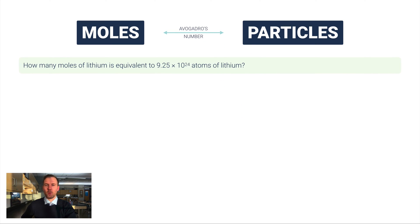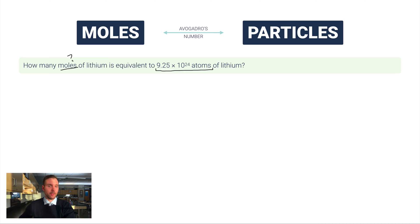This is best demonstrated with example problems. The first problem asks: how many moles of lithium is equivalent to 9.25×10²⁴ atoms of lithium? This number is so large and in scientific notation because in any weighable sample — lithium is a good example — there are tons and tons of atoms in even just a gram.